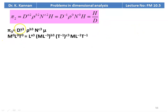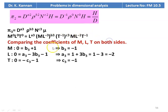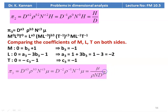For pi3 with mu: M⁰L⁰T⁰ = L^a3 · (ML⁻³)^b3 · (T⁻¹)^c3 · ML⁻¹T⁻¹. Comparing: b3 = −1, a3 = −2, c3 = −1. Therefore pi3 = d⁻² · rho⁻¹ · n⁻¹ · mu = mu / (rho · n · d²).